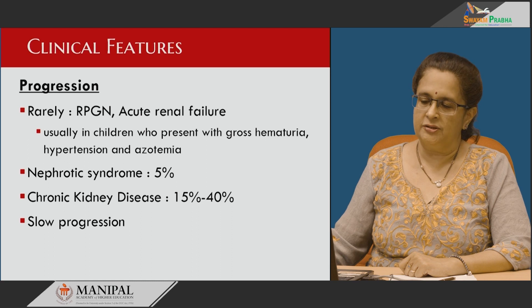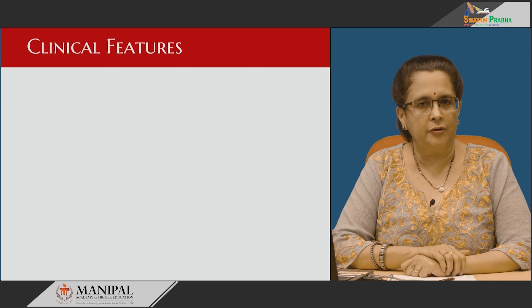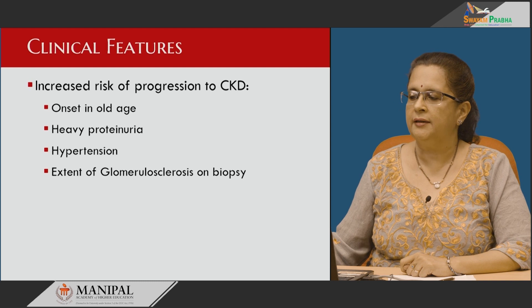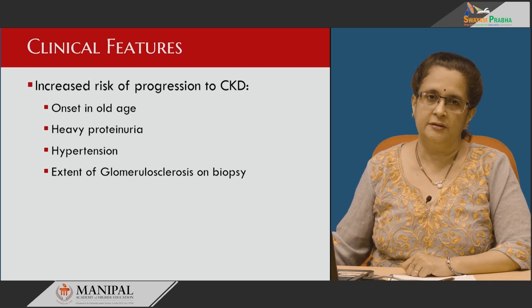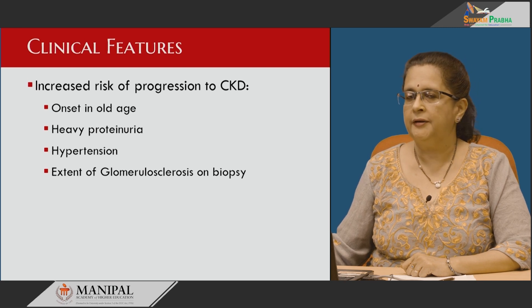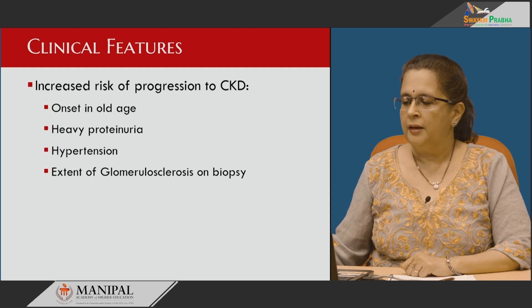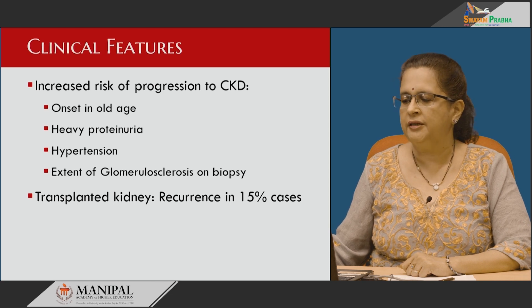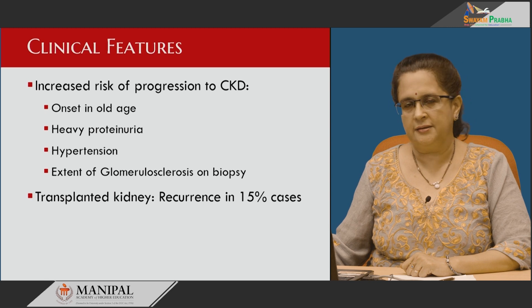The progression when it occurs is usually very slow. An increased risk of progression to chronic renal failure is seen in association with onset in older individuals, heavy proteinuria, hypertension at presentation, and the extent of glomerulosclerosis on biopsy. IgA nephropathy can also occur in transplanted kidneys in up to 15 percent of cases, and this recurrence is deleterious to the transplanted kidney.